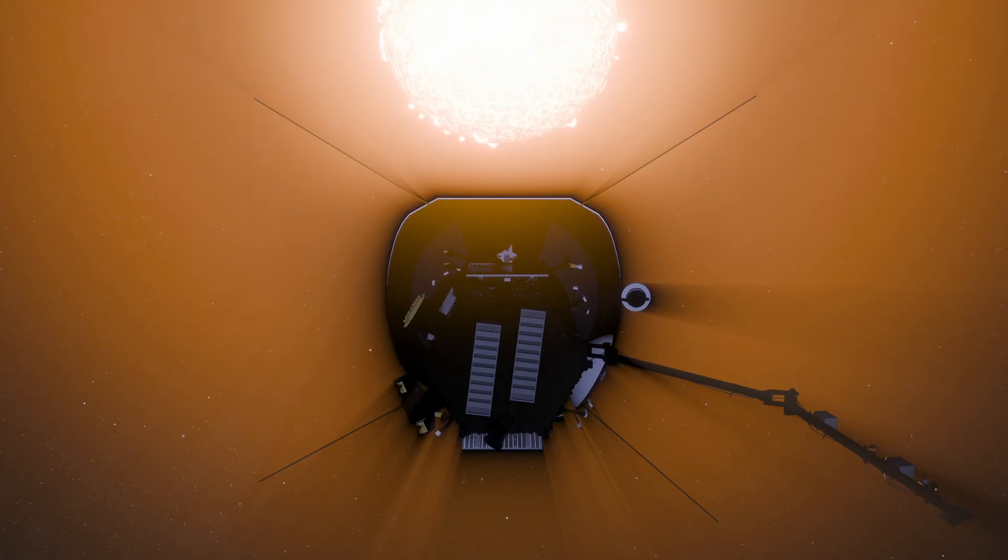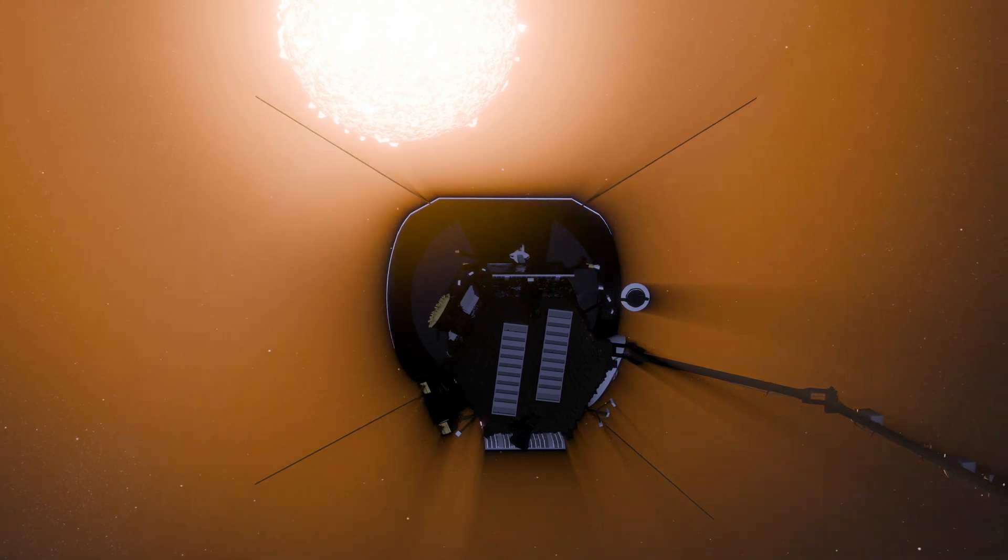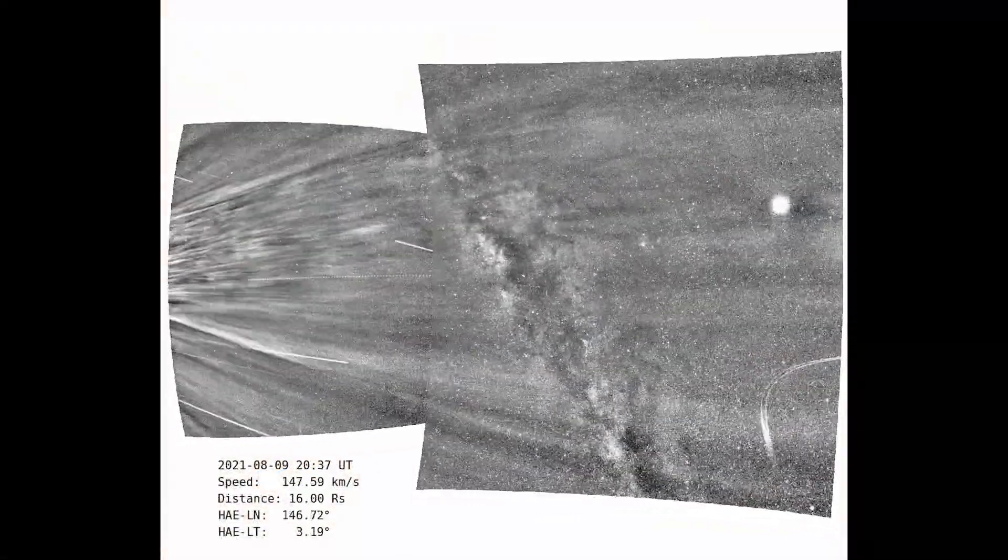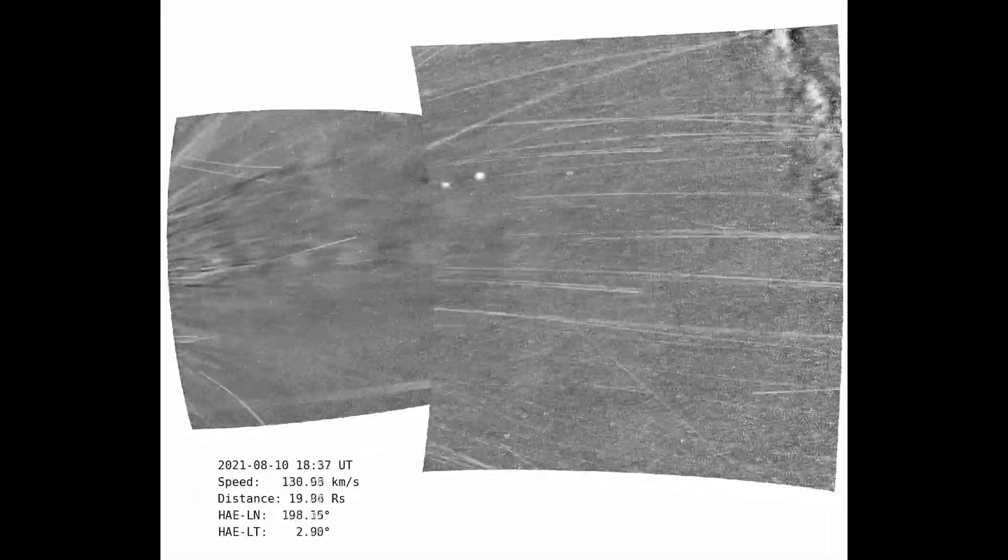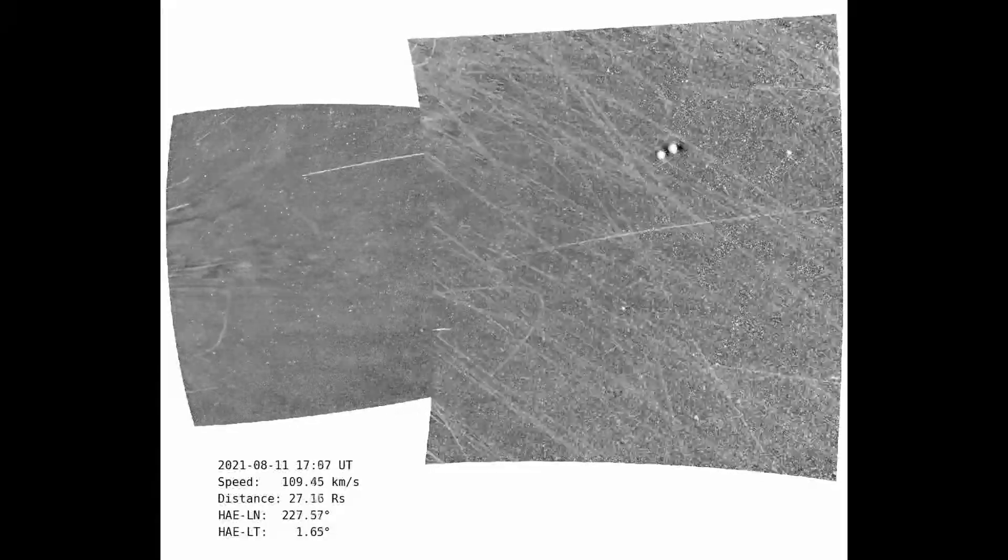As Parker flies through the sun's outer corona, the probe's scientific instruments can directly measure the particles and magnetic fields it encounters down to the scale of meters. Special cameras can also make close-up images of the solar wind and solar storms as they begin their journey away from the sun.